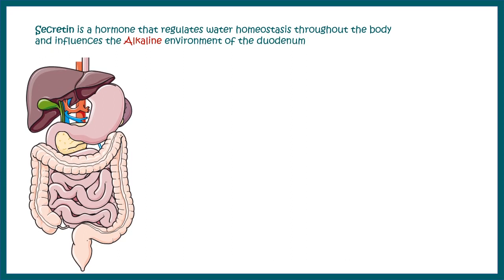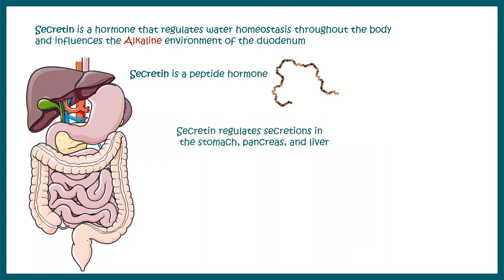Secretin is a hormone that regulates water homeostasis and influences the alkaline environment in the duodenum, neutralizing the acidic nature of chyme coming down from the stomach. Chemically, secretin is a peptide hormone and it regulates several secretory events from the stomach, pancreas, and liver. In this video we'll look at this in detail from a cellular point of view.